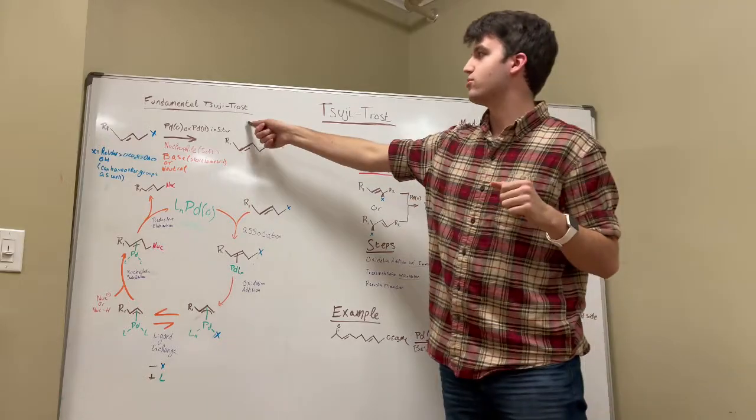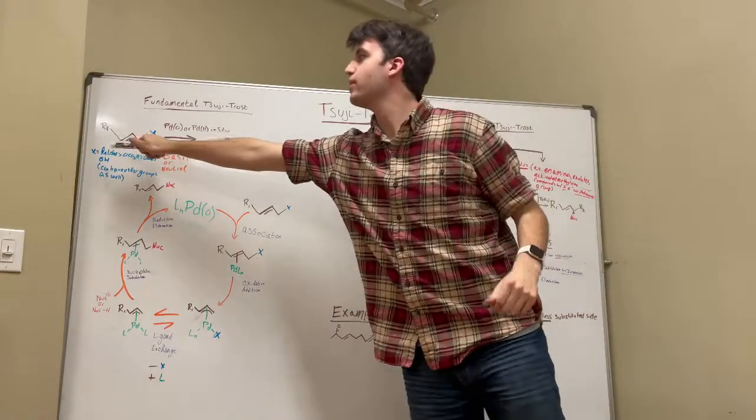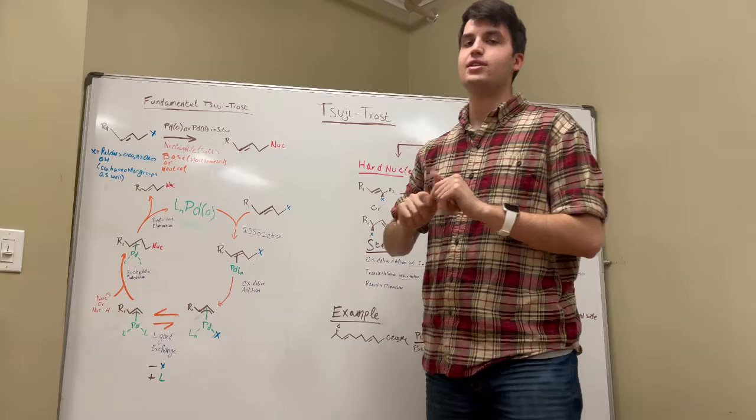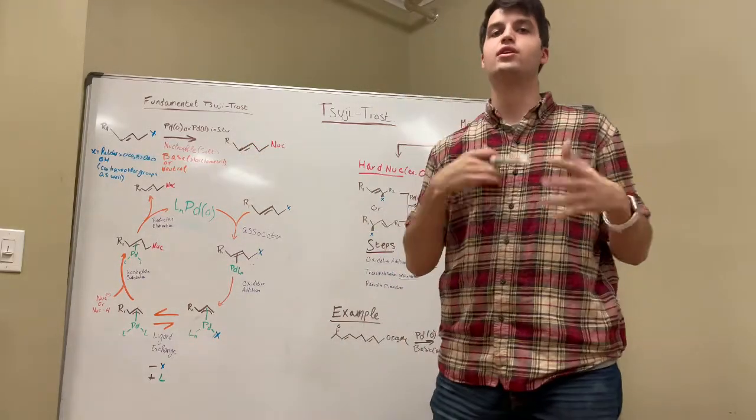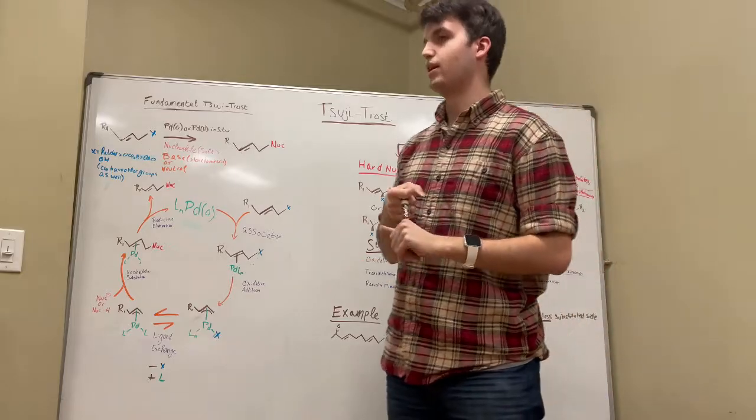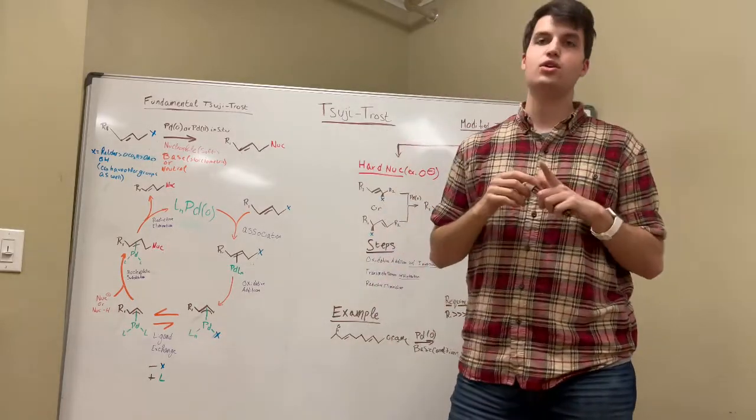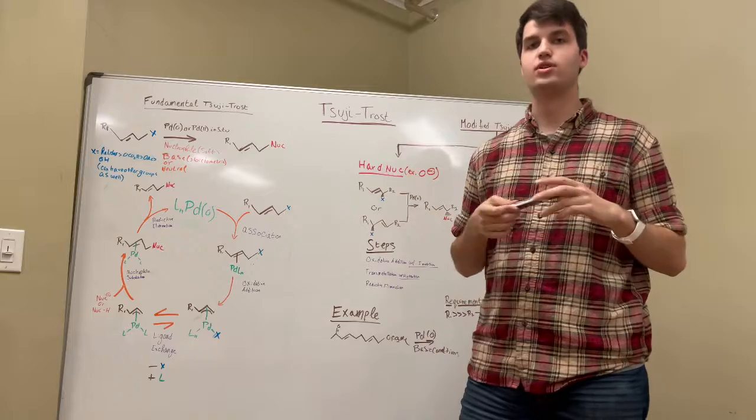So, in the fundamental Tsuji-Trost, what we have is an alkene with one alkene and then a leaving group. This leaving group can be halides or oxygen leaving groups. Cyanine groups work well for this as well. You can also have phosphorus or sulfur ones too.